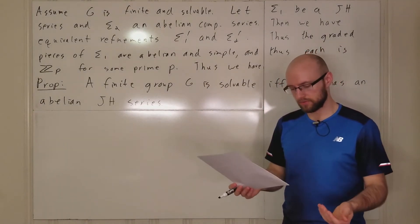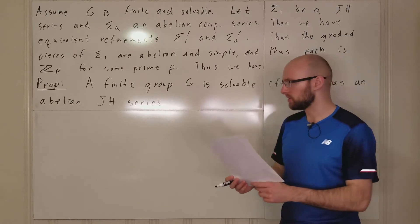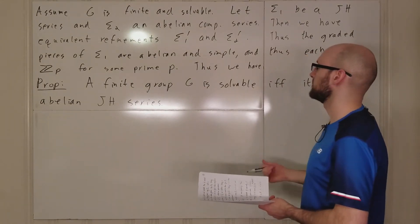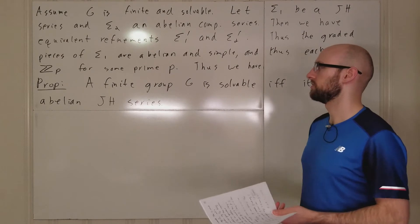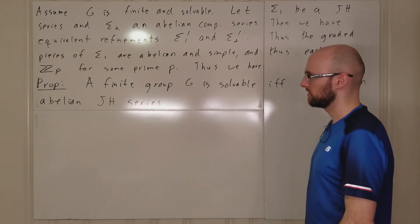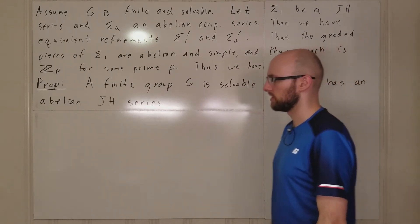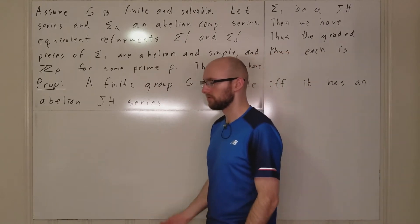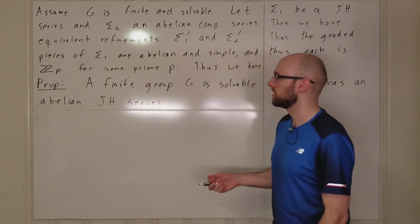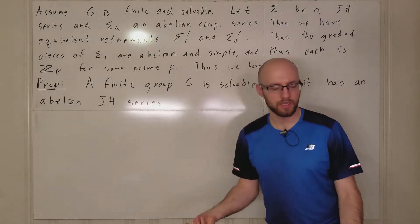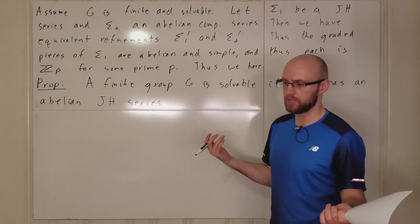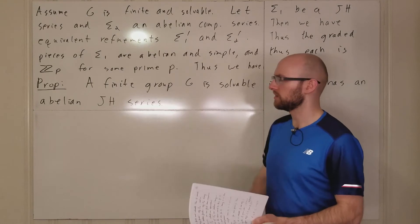For the reverse direction: suppose you have a finite group G that has an Abelian Jordan-Hölder series. Well, if it's an Abelian Jordan-Hölder series, then all of the quotients are Z mod pZ, and so each Z mod pZ is simple and you're done.